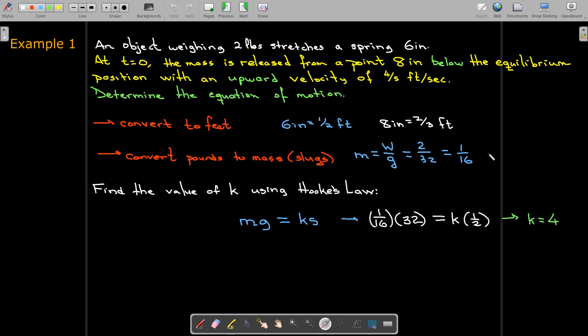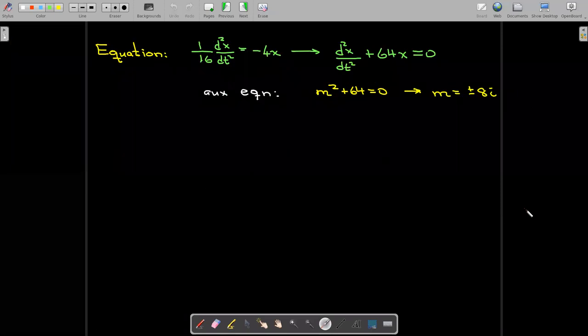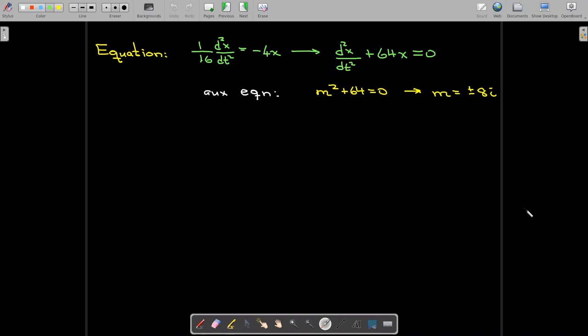So we'd like to find the value of k using Hooke's law. And so that just, remember this is at rest or at the equilibrium position, and that gives us k equals 4. And now we have our initial differential equation. And I can multiply through by 16. Get it in standard form. Take a look at our auxiliary equation. And as expected, we're going to get an equation involving sine and cosine. We just need to determine the coefficients c1 and c2, or the parameters c1 and c2.